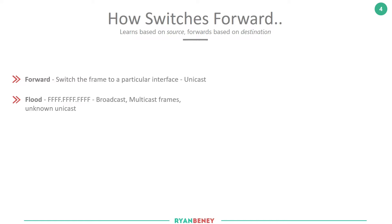Flooding is a key mechanism by which the switch builds its CAM table. When the flooded frame reaches the intended host and that host responds, the switch sees the response come in. Since the switch learns based on source addresses, it sees the responding host's source MAC and can now populate the table with the correct port for that MAC address.